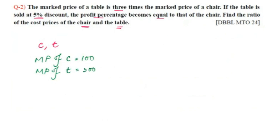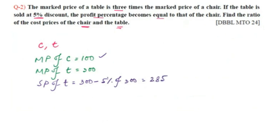The table is sold at a 5% discount on its marked price of 300, giving a selling price of 285. The profit percentage on the table is (285 minus T) divided by T, and this equals the profit percentage of the chair. Setting these equal gives us the equation 285C = 100T.